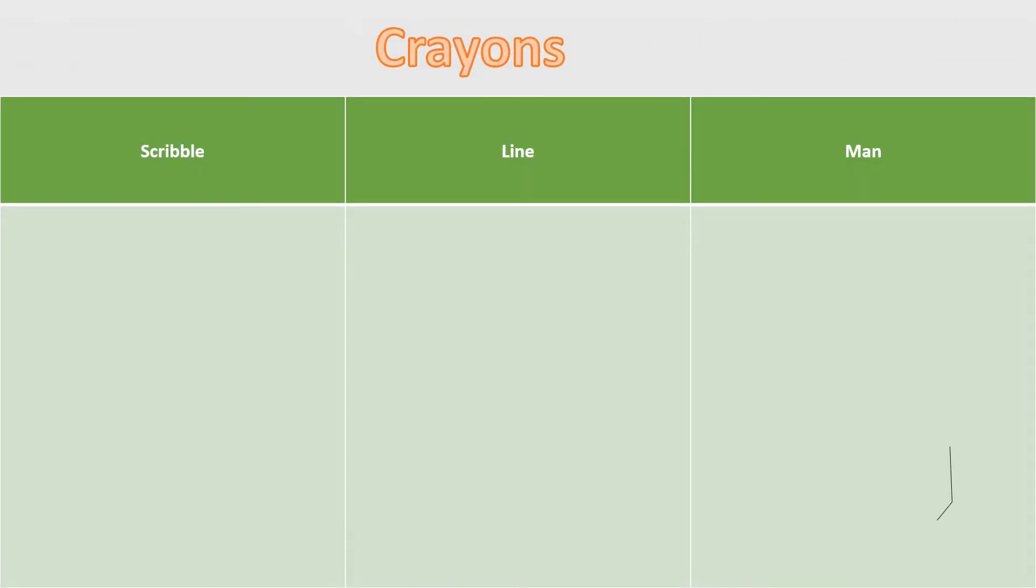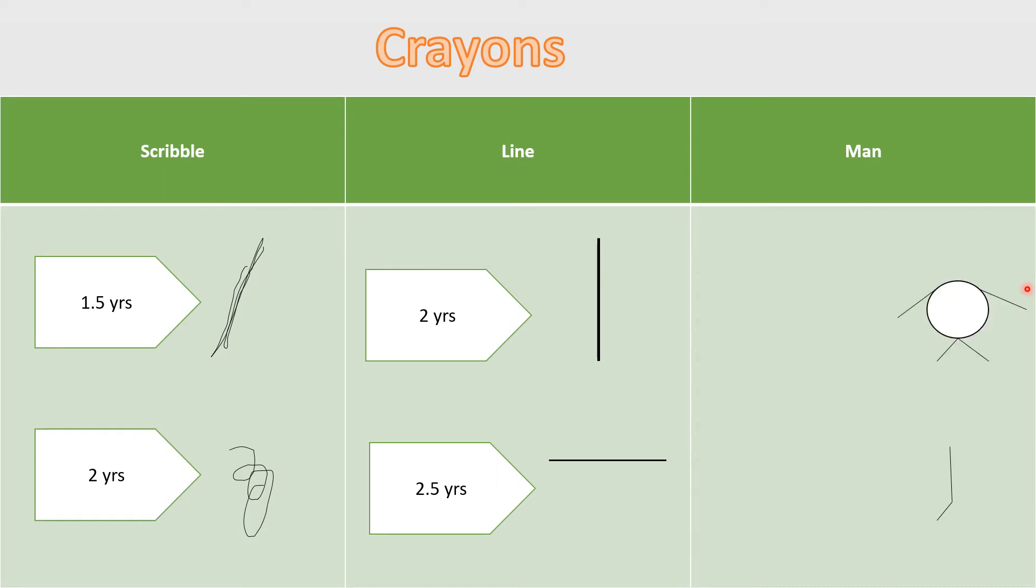Moving to the crayons. There are two parts. The first part which is scribbling, making lines, and drawing a man. If the child is scribbled like this, estimated age will be one and a half years. Scribbled in a round fashion, it will be two years. For the lines, there are vertical and horizontal. If the child scribbled or drew a line which is vertical, he will be two years. Horizontal, two and a half. What easy it is. Drawing a man, if he draws like saying that this is a head, this is hands, this is legs, he will be three years. If he draws a proper man with a trunk and limbs, then he will be four.